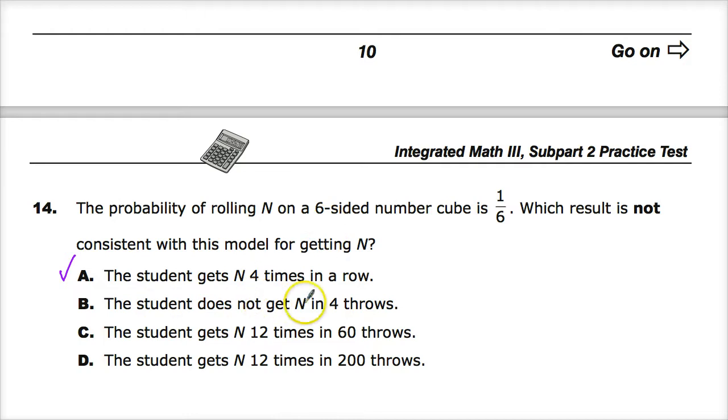B, the student does not get N in four throws. That's actually clearly consistent with the model. It's only going to happen one time. It doesn't say it's the first time. It could happen on the fifth time, the sixth time, or just average itself out. So this is consistent with it because it's not limited, or it limits itself to four throws, which is less than the possible number. So if it just has to happen once, it certainly still can.